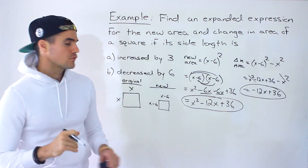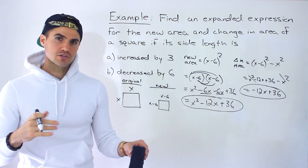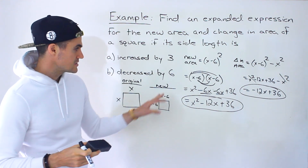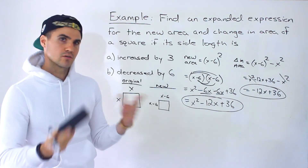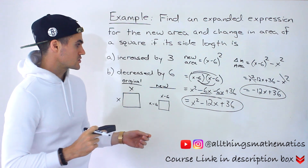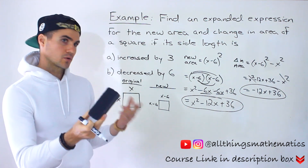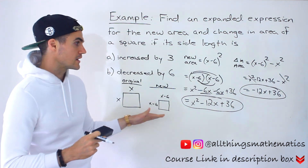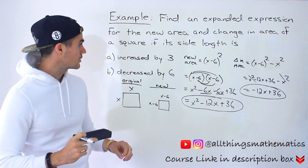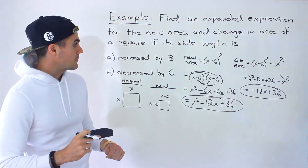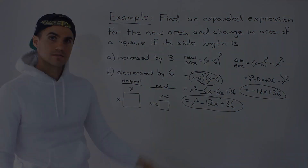This is a fairly straightforward question — I feel like it's easier than some previous ones we've done, especially when we were working with the circle and the change in area with the radius and diameter. But that's how you do this type of question.